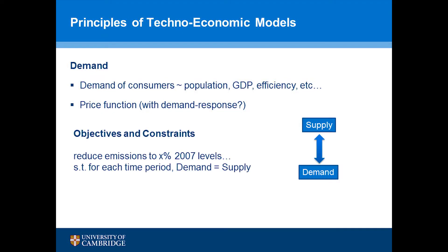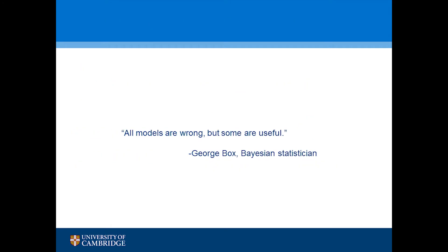Objectives and constraints: supply must equal demand, but you can also have a number of different constraints and build scenarios. One example I've seen is that within a five-year time period you're not allowed to invest more than a certain number of billions to upgrade infrastructure, because there's a constraint on material and construction. All models are wrong, but some are useful.